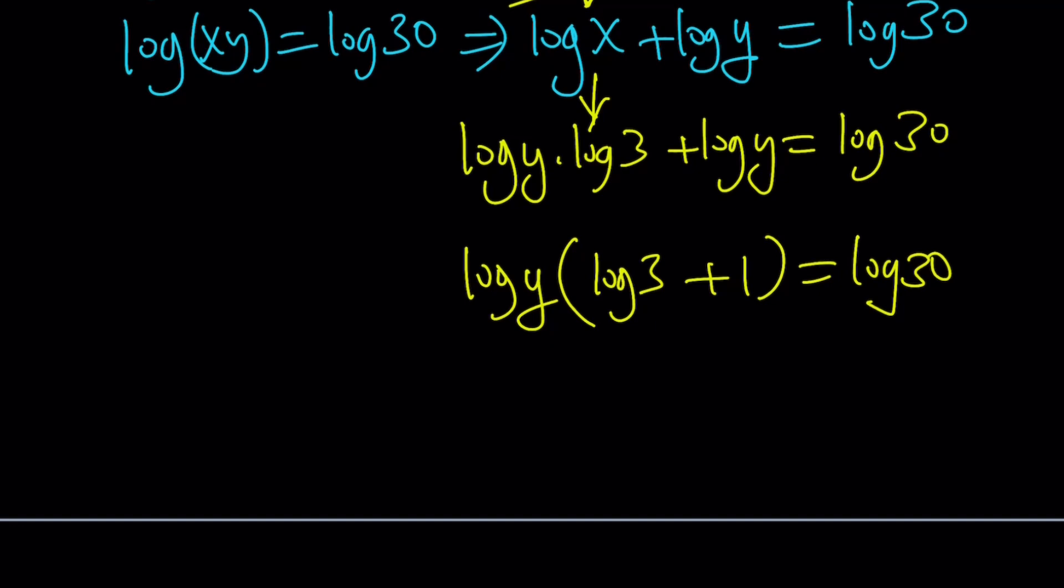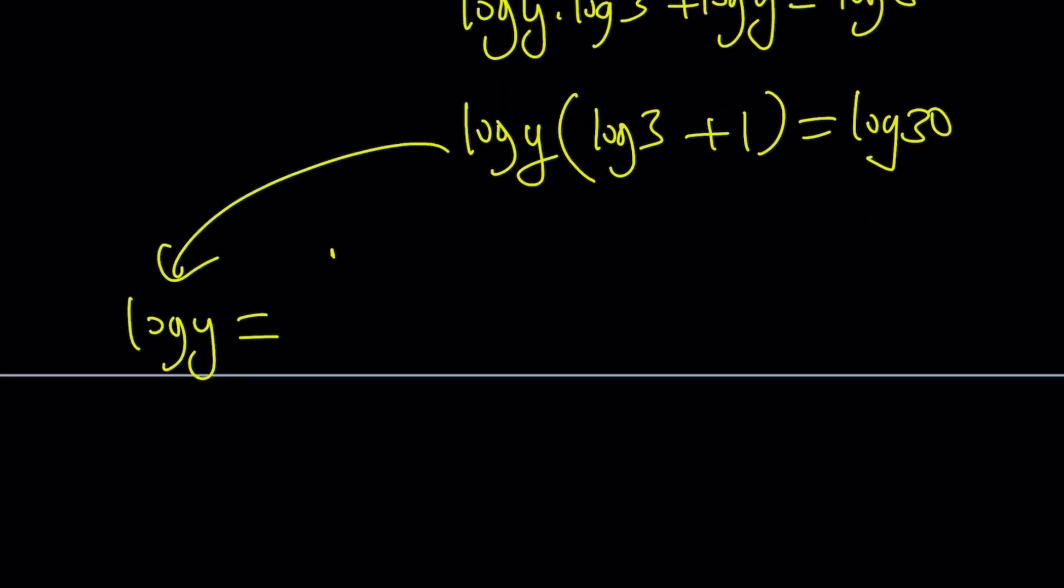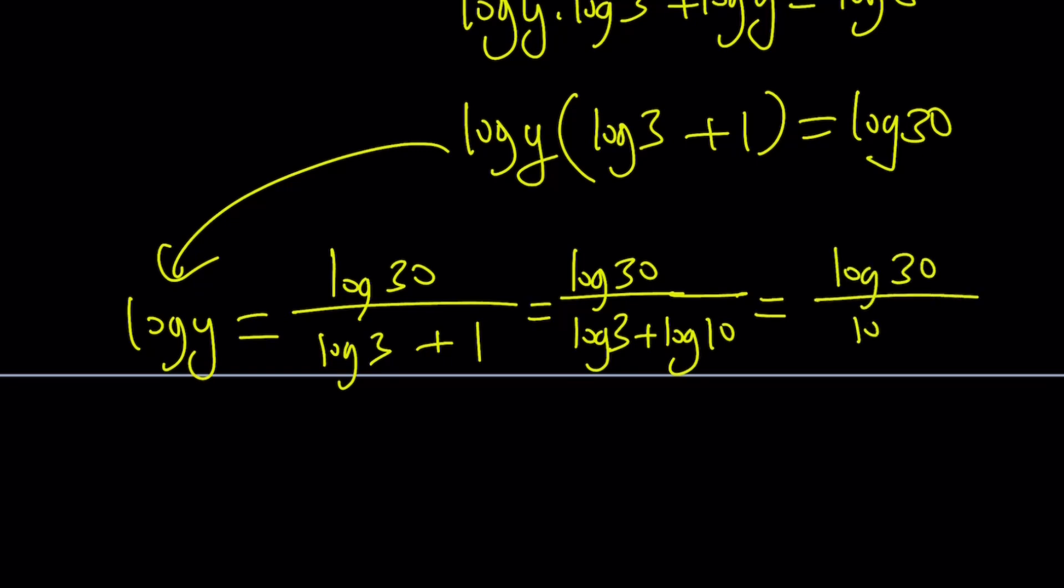Let's divide both sides by log 3 plus 1. Log y equals log 30 divided by log 3 plus 1. You can do 10 to the power of both sides. But before that, let's simplify the right-hand side because it's going to be more meaningful if we do that. We can write log 3 plus 1 as log 3 plus log 10. So, this becomes log 30 divided by log 3 plus log 10. And notice that I do have the sum of two logs which can turn into the log of a product. 3 times 10 is 30. So, this is also log 30. But guess what? They're the same, so it's 1. So, log y is equal to 1, which implies y is equal to 10.